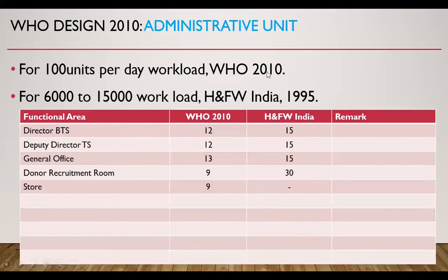For the Administrative Unit at 100 units per day workload, WHO 2010 recommends 12 square meters for the director's room, similarly for the deputy director, then general office, donor recruitment room — a very important activity in blood banking — and general store requiring 9 square meters.